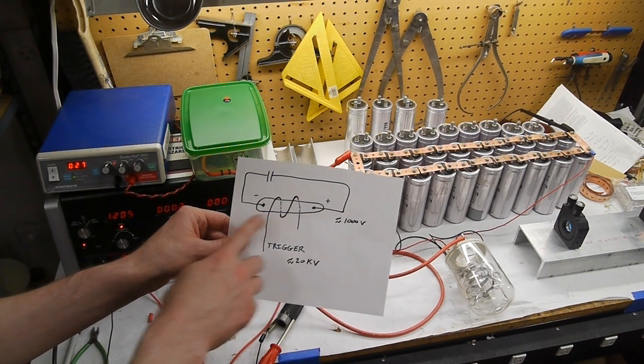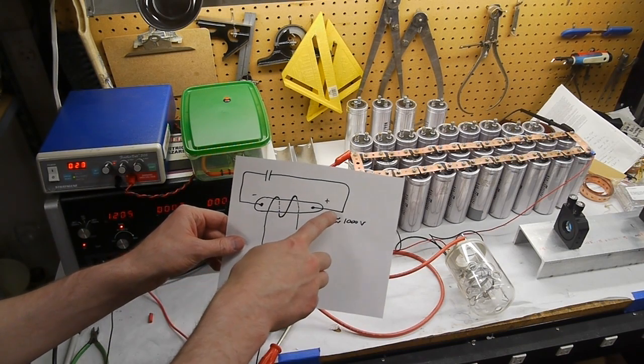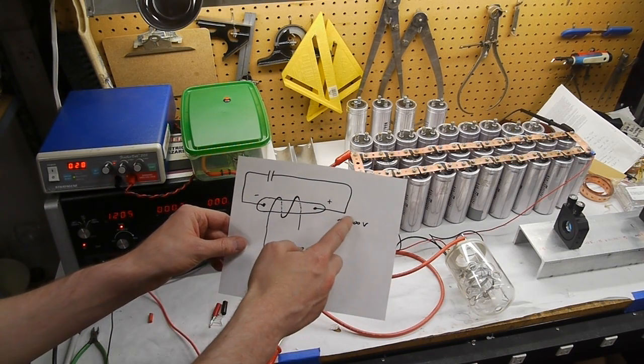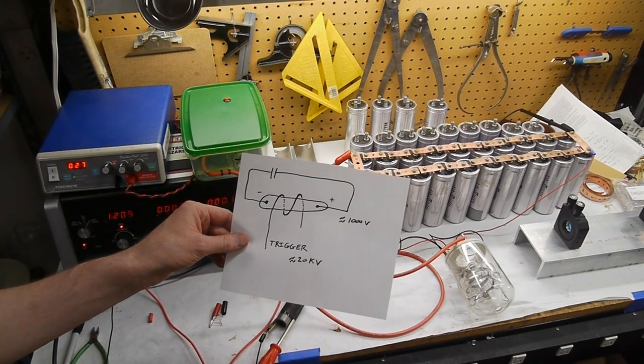it will ionize the gas through the glass of the flash tube and then lower the resistance and suddenly all that power that's in the capacitor bank can discharge through the flash tube.